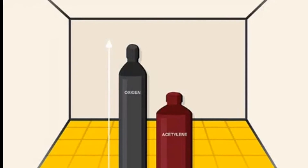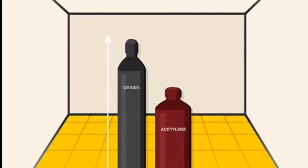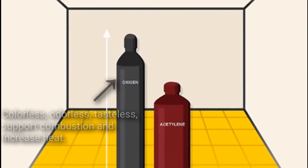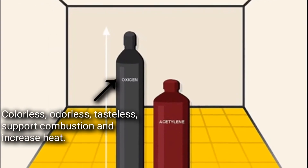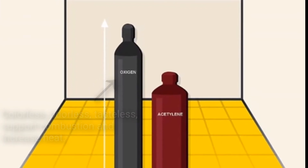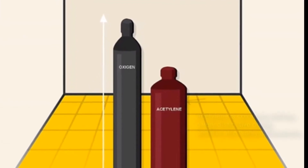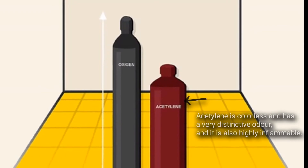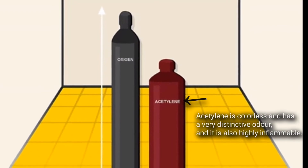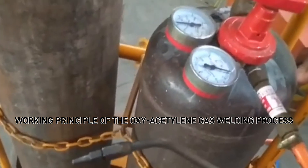Oxy-acetylene gas welding uses oxygen and acetylene. The properties of oxygen are: colorless, odorless, tasteless, supports combustion, and increases heat. Acetylene is colorless, has a very distinctive odor, and is highly inflammable.